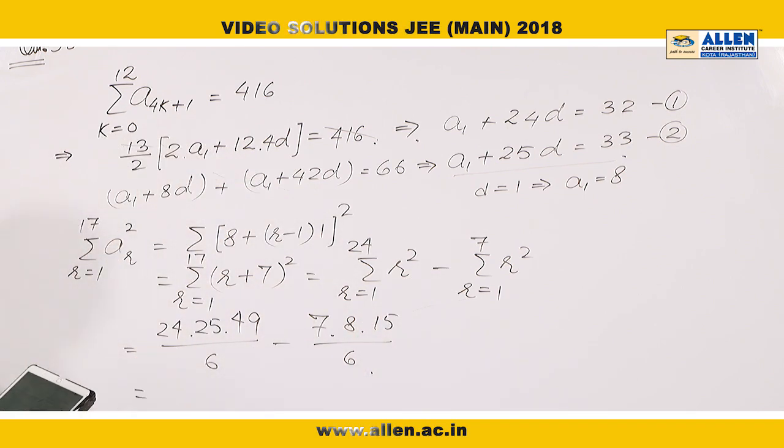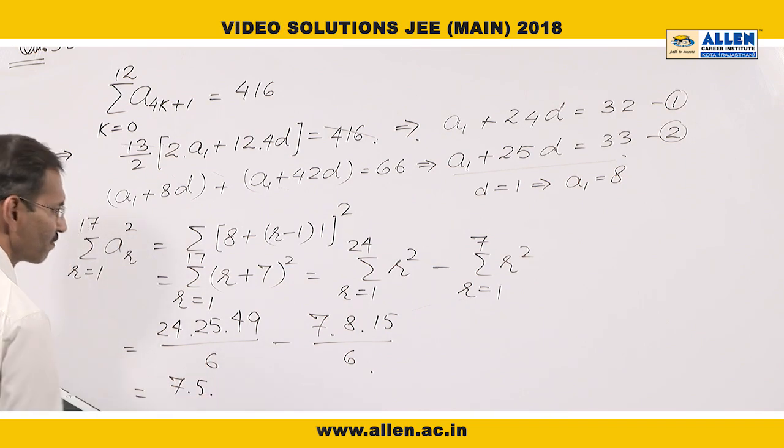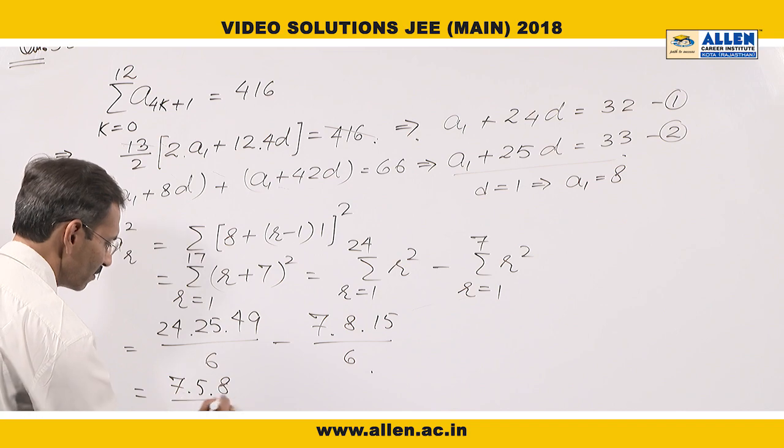Now we will simplify this expression. We can take 7, 5, and 8 as common factor divided by 6.